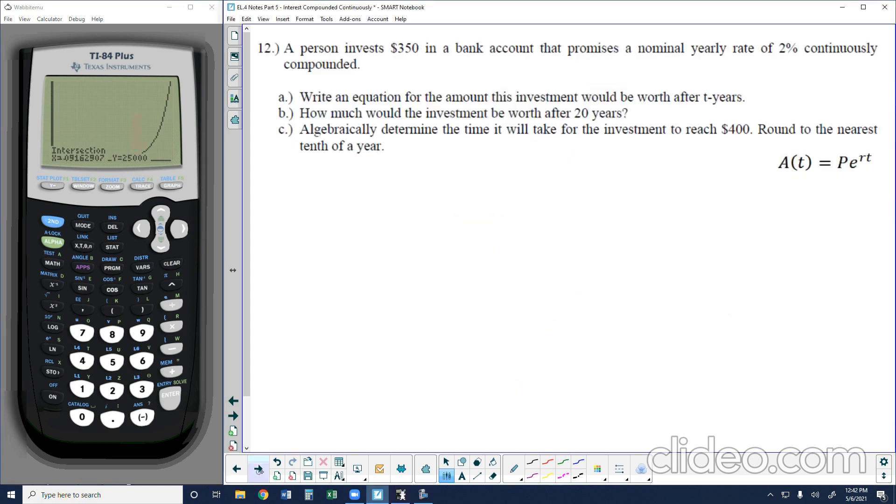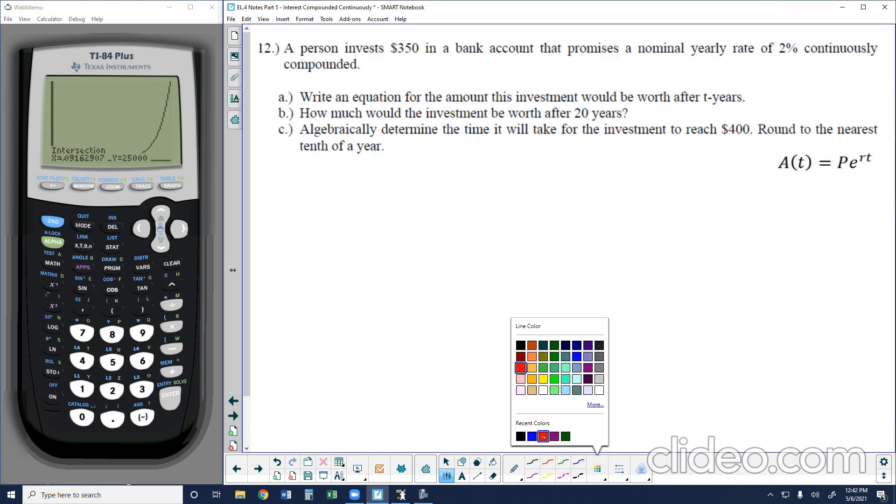Let's take a look at another example. In problem number two, it says a person invests $350 in a bank account that promises a nominal yearly rate of 2% continuously compounded. So again, we're going to use this equation, which I have listed over here to the right. Write an equation for the amount this investment would be worth after T years. So what we're going to do here is essentially take our equation A of T and substitute in the principal, which is the initial amount that we're investing, 350, times E, the rate is 2%, so 0.02, to the T power. So this equation, this function here will allow us to find the amount over any time.